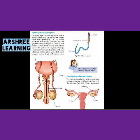The male gametes are called the sperms. The male reproductive system produces millions of sperms, and these sperms are produced from the testes. The picture is showing a pair of testes and the picture of sperm is also shown in the figure.